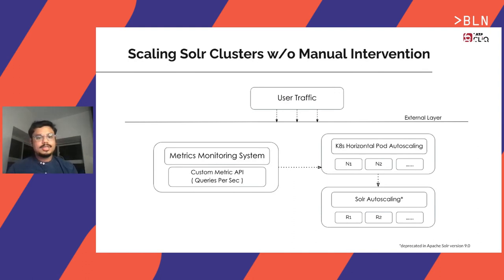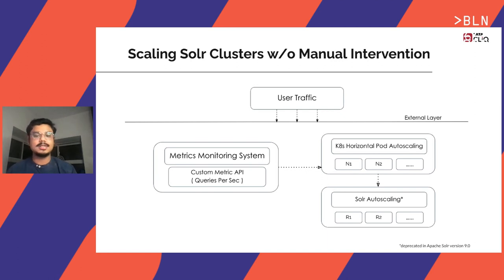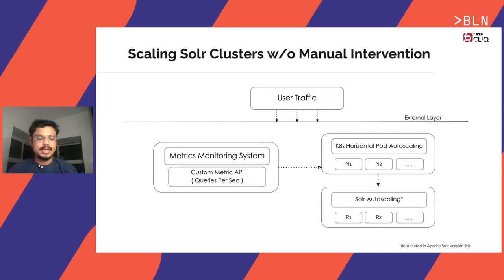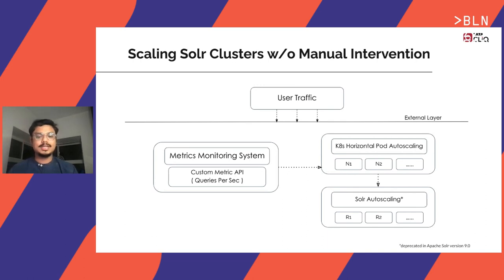The solution design we are looking at involves three components. First, a monitoring tool to report custom metrics from your application — in this case, Solr. Second, Kubernetes Horizontal Pod Autoscaling, which scales existing replica sets — that is, deployments or stateful sets — based on provided metric values. Kubernetes HPA provides the physical scaling of nodes. And then, finally, the good old but now deprecated Solr autoscaling, which provides the logical scaling of replicas. Let's dive into these three components one by one and understand the relationship between them to set up scaling Solr clusters without manual intervention.